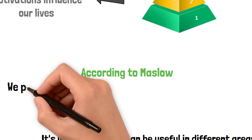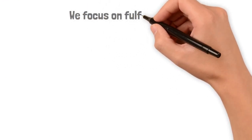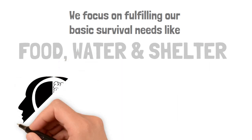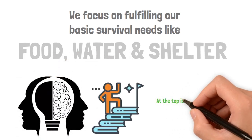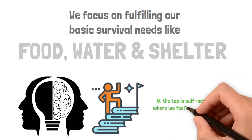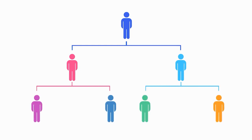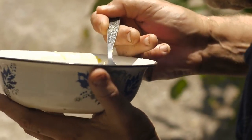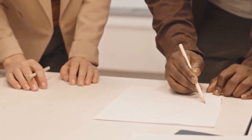According to Maslow, we prioritize our needs on a psychology theory. First, we focus on fulfilling our basic survival needs like food, water, and shelter. Then, as those needs are met, we move up to satisfying psychological needs. At the top is self-actualization, where we feel content and fulfilled by reaching our potential. Imagine this hierarchy as a ladder. You start at the bottom and climb step by step. You won't think about prestige if you're struggling to find food and shelter. The idea is to fulfill the needs at the bottom first before moving up.